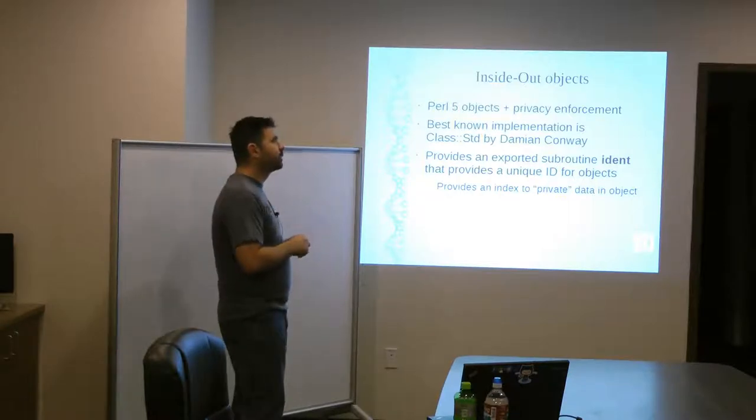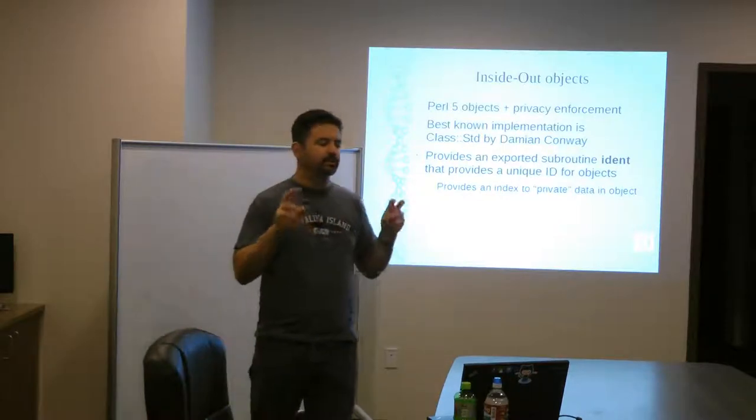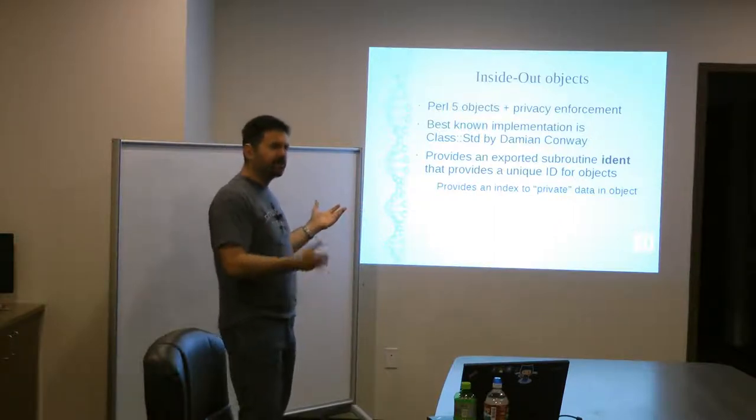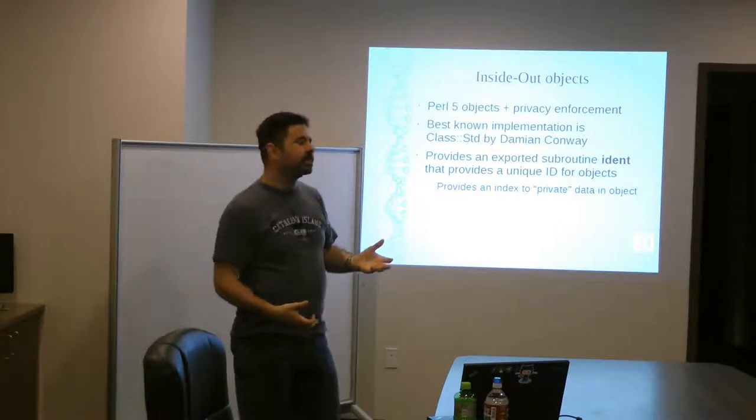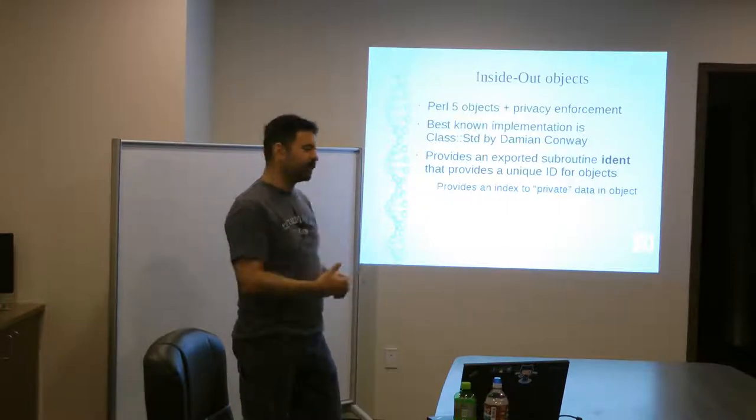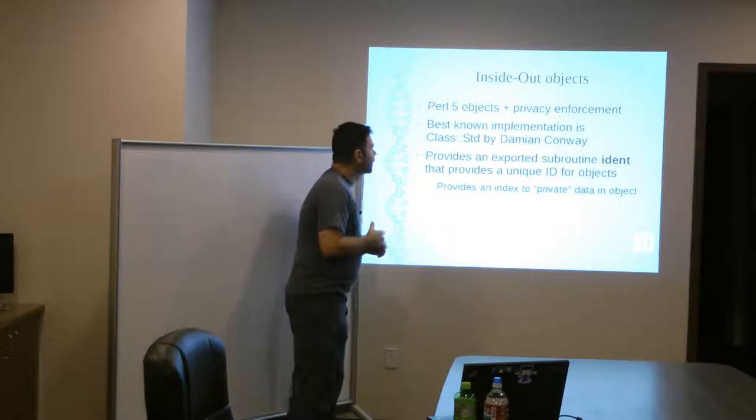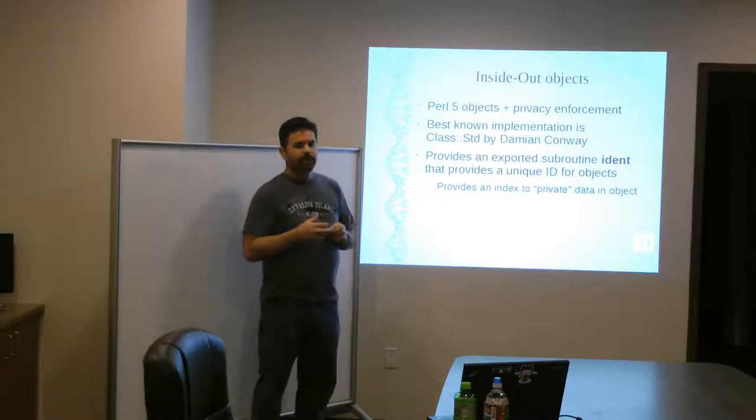In that book, he talks about his suggestions for best practices for objects. And he points out some of these drawbacks, these inadequacies that the Perl 5 object system has, and ways that he has found that make up for some of those inadequacies. And he called it inside-out objects. So, it's essentially, you're still treating your objects like Perl 5 objects, blessed hashes, really. But it gives you some privacy.